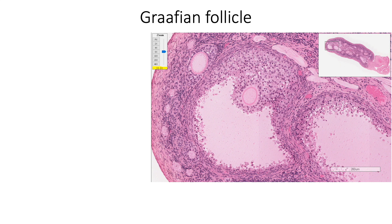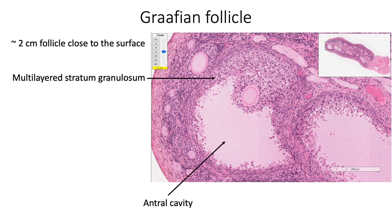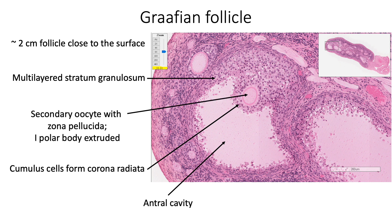Among the 15 to 20 primary follicles, one follicle progresses to become a tertiary follicle, or the Graafian follicle. These are approximately 2 centimeters in diameter and reach close to the surface of the ovary, pointing at the stigma. They have a large antral cavity lined by multilayered stratum granulosum. The cumulus cells become loosely arranged around the oocyte in preparation for ovulation. The primary oocyte completes its first meiotic division to form the secondary oocyte, still surrounded by zona pellucida, and the first polar body is extruded into the perivitelline space. We can also see the surrounding theca interna and externa outside the follicle.